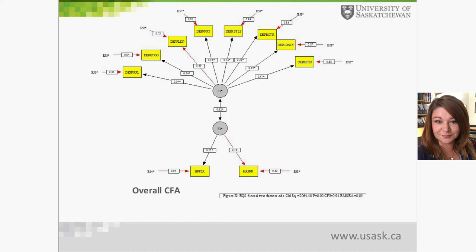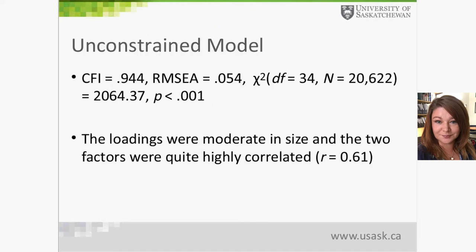There are numerous methods for determining whether this factor structure fits well with the data. We used chi-square — though it is very sensitive to large sample sizes — and the Comparative Fit Index (CFI), which has been adjusted to be less driven by large sample sizes. A CFI above 0.95 is generally considered a good fit. We also used the Root Mean Square Error of Approximation (RMSEA); some recommend under 0.06 for good fit, others under 0.05. Based on these fit indices, the two-factor structure is an adequate fit to the data.